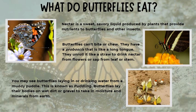What do butterflies eat? Nectar is a sweet, savory liquid produced by plants that provides nutrients to butterflies and other insects. Butterflies cannot bite or chew. They have a proboscis that is like a long tongue. You may see butterflies lying in or drinking water from a puddle — this is known as puddling.